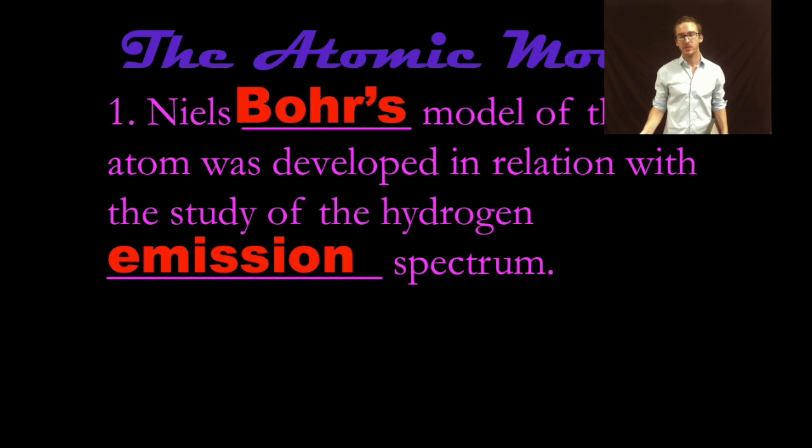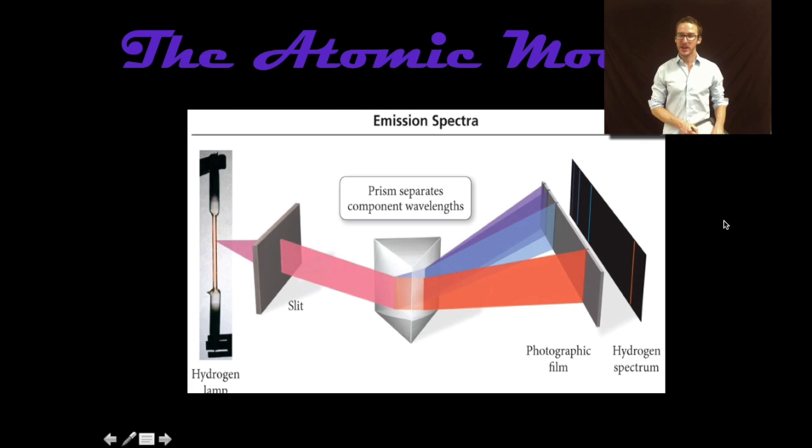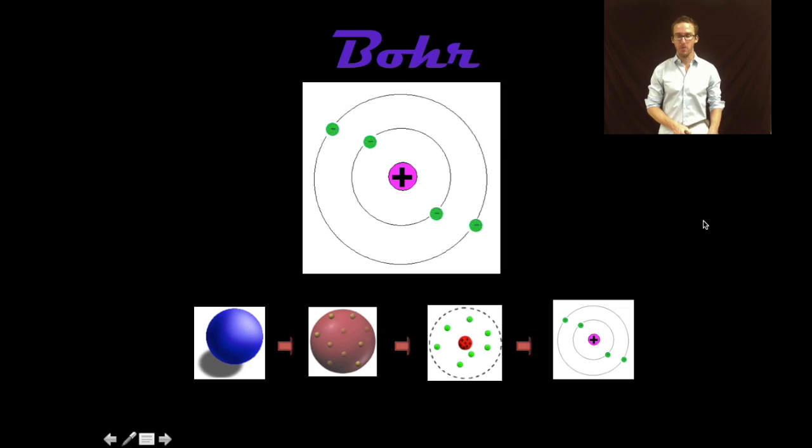Now, Bohr's model of the atom was developed as he studied what's called the hydrogen emission spectrum. And as you look at your screen, there's an image of an emission spectrum. And at this point, I don't want you to get worked up over what this experiment was. At this point, I just want you to recognize that this was the experiment that Bohr was using that helped him propose this idea of electrons in orbits. Bohr model. Not boring at all.